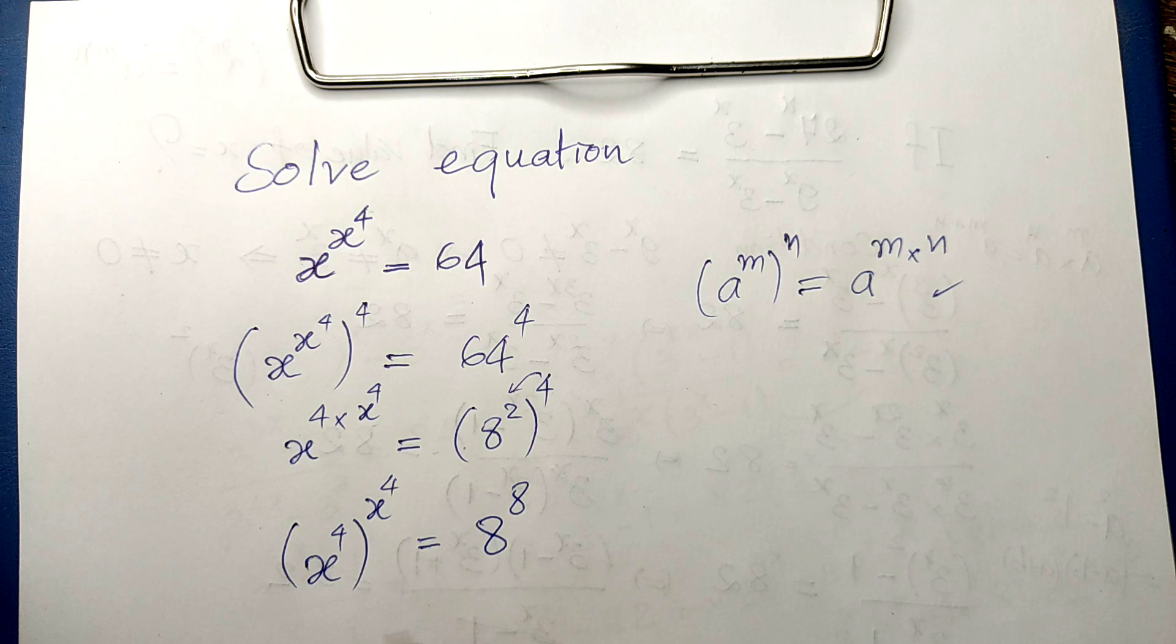So this we can write x to the 4th equals 8. X to the 4th, and then x to the 4th, so this we get 8 to the 4th equals 8.